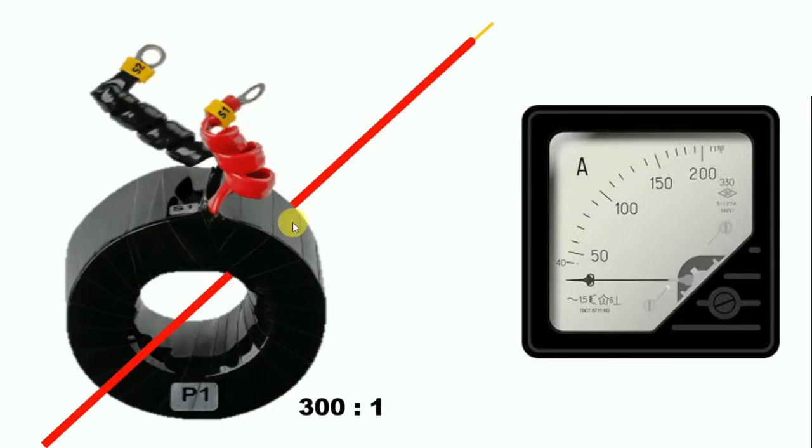Friends, as you know, the ratio we use in CT, we have to use the same ratio in the ammeter also. Like the ratio of this CT here is 300 by 1, so the ratio of the ammeter we use must also be 1 by 300.